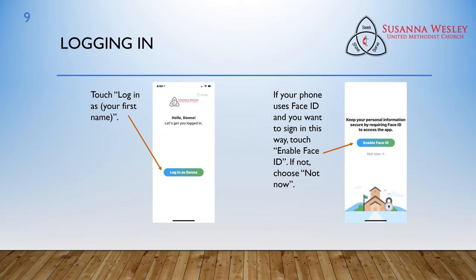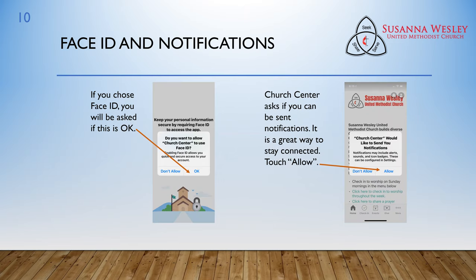On the next screen, you can touch Log In As and your first name will appear. If your phone uses Face ID and you want to sign in this way, touch Enable Face ID. If not, choose Not Now. If you chose Face ID on that last screen, you'll be asked if this is okay, just to double check. Church Center asks if you could be sent notifications — it's a great way to stay connected. Touch Allow.